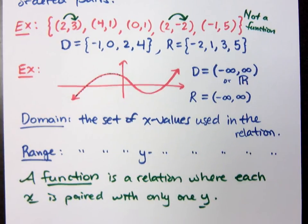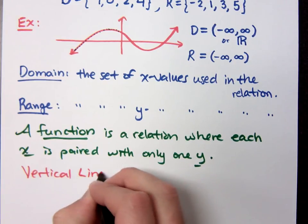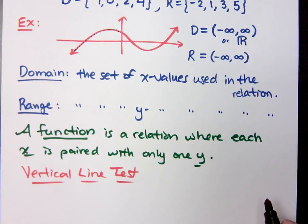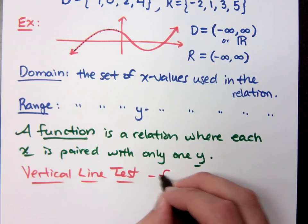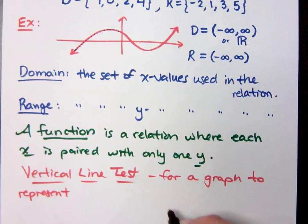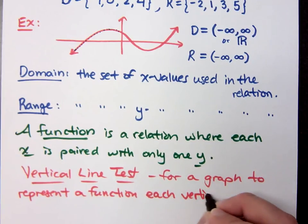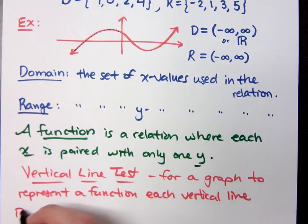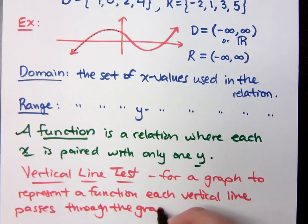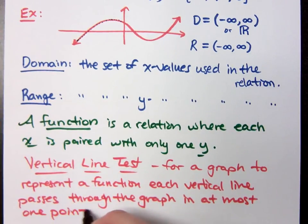Here's something that might help you out. What were you going to say? Vertical line test. Vertical line test. The vertical line test. Now, this says that for a graph to represent a function, each vertical line passes through the graph in at most one point. In order for your graph to represent a function, every vertical line passes through that graph in at most one point.